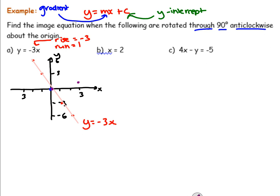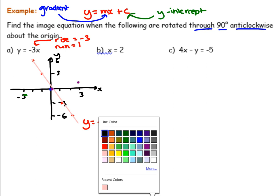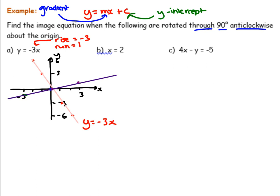Now let's try rotating another coordinate: the coordinate at 1, negative 3. If I rotated that 90 degrees in an anticlockwise direction, where is it going to end up? It's going to end up at negative 3, negative 1 — about there. So you could potentially draw the line now. I'm going to draw the line in purple, cutting through those points as much as possible.